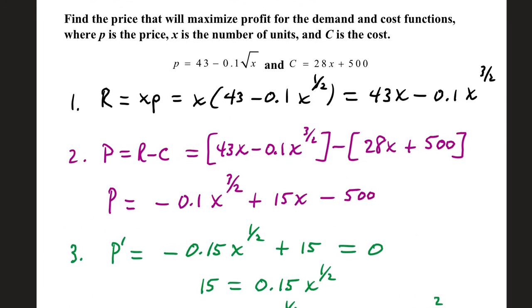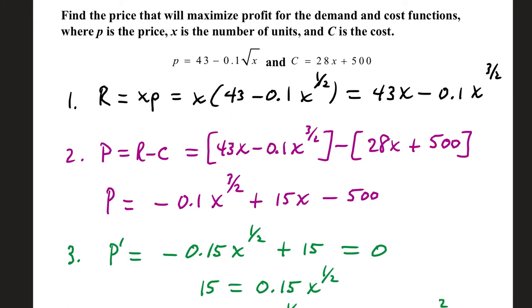Find the price that will maximize profit for the demand and cost functions, where lowercase p is the price, x is the number of units, and capital C is the cost. First, let's build the revenue function, that's x times p. Think of it as, if you sell 100 tickets at $5 a piece, that's $500 revenue. So we have x times our demand function.